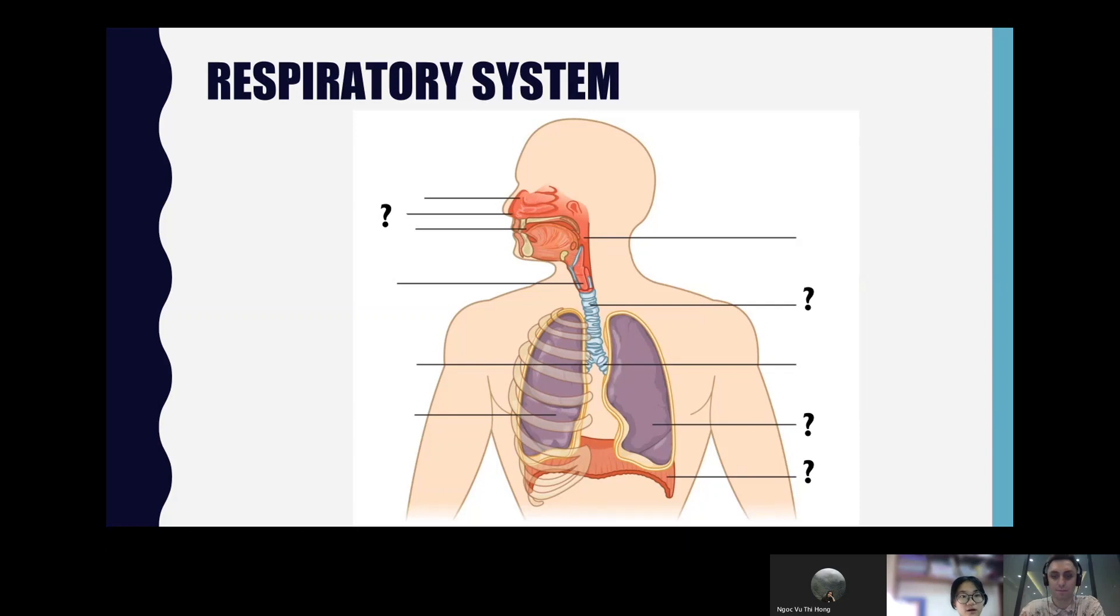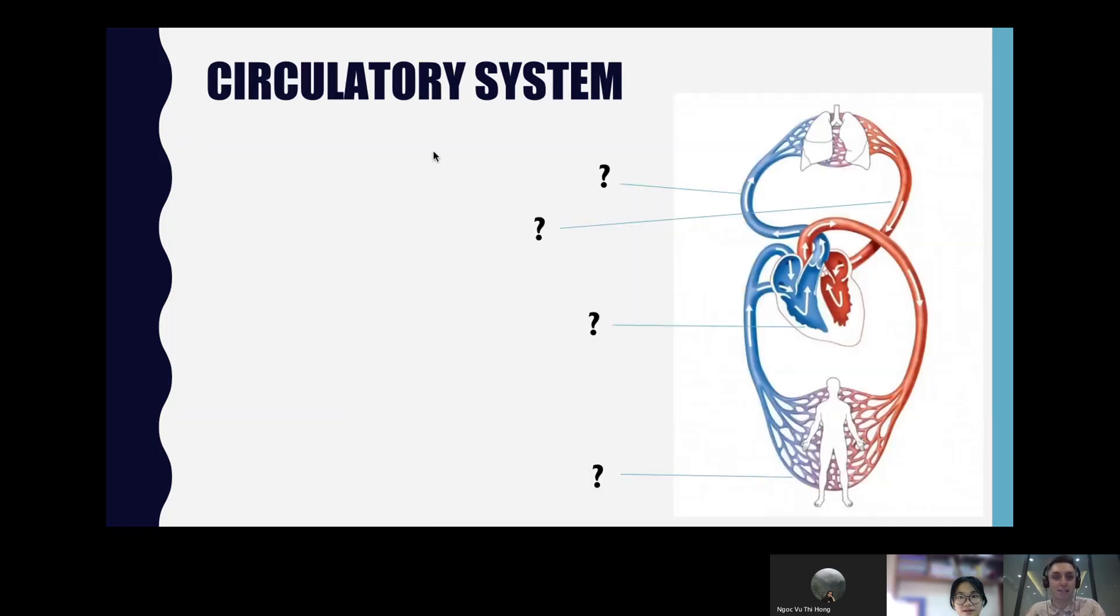What are the main parts of the respiratory system? The main parts of the respiratory system is the trachea, the lungs, and the diaphragm. Yeah. Very good. Well done. And so this part here, what is this called? How does the air get into our body? The air get into our body through the nose or mouth. Yeah. Fantastic. Okay. Brilliant. Okay. Let's move on to the next system.